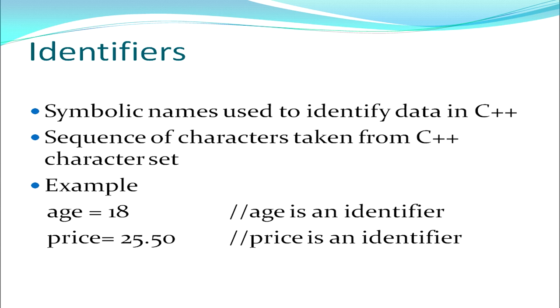Next, we have identifiers. Identifiers are names used to identify data. Now I am using a computer to store data, which can be of any type. Say suppose I am storing data of students of my class — I have to store the name, the age, the marks and so on. So I have to differentiate this data by giving different names by which this data will be identified. Identifiers are formed from the C++ character set only — only those characters acceptable by the C++ language can be used to form identifiers, so that data can be distinguished and identified.